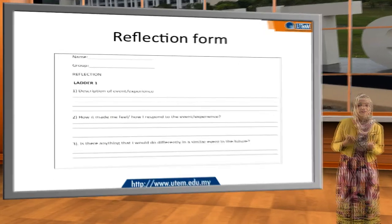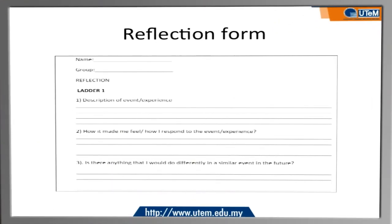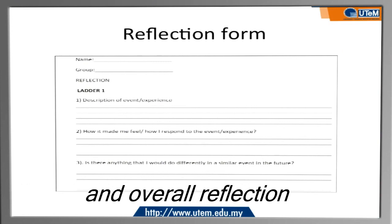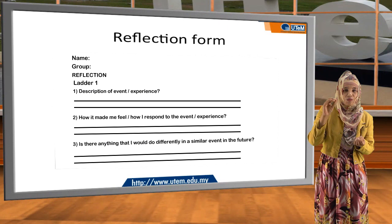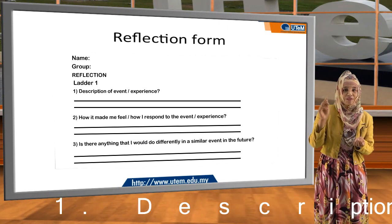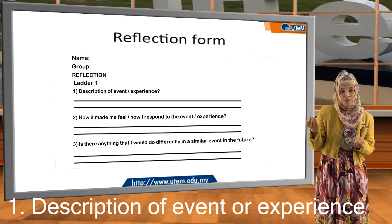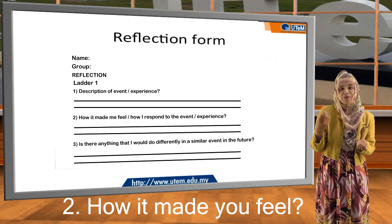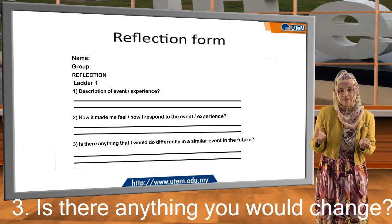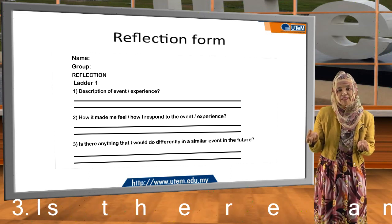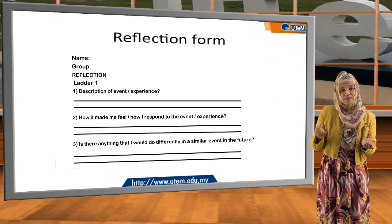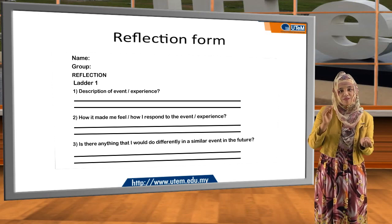This is the example of the reflection form. You have letter 1 — taking just one example — and it continues on to letter 2, letter 3, letter 4, and overall reflection. For letter 1, what will you express? First, a description of the event or experience you underwent in letter 1 — describe the event. Second, how it made you feel and how you responded to the event. Third, is there anything you would do differently in a similar event in the future? These are your comments — how you look at the event, whether you want to improve, and your suggestions. You will be filling out this reflection form for each letter.